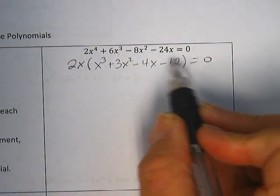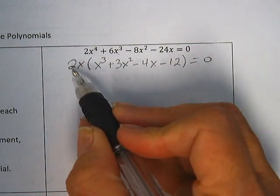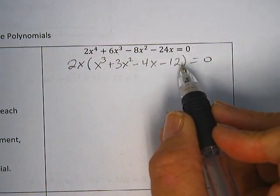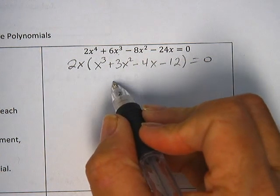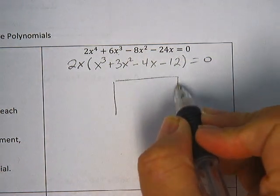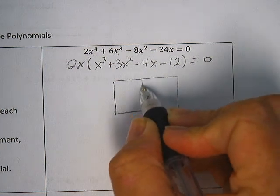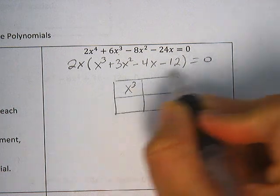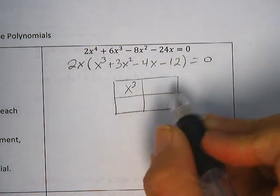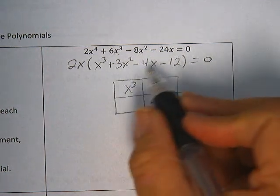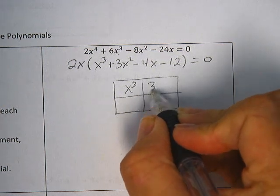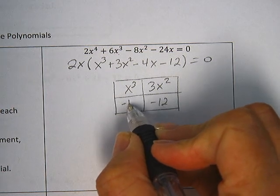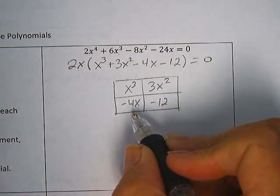Now we're going to concentrate on what's inside this parentheses. The 2x is just going to hang out there until we're ready to solve. So we've got four terms here. We're going to go ahead and just put them into a box. Our cubic term will go in the top left, and our number without the x goes in the lower right. The other two you can put in either box. I tend to put the squared term in the top right, and the negative 4x in the lower left.